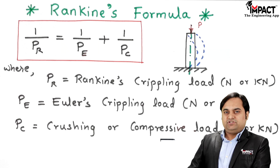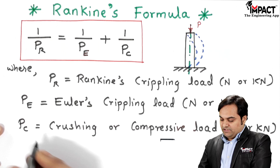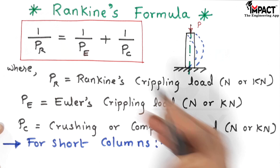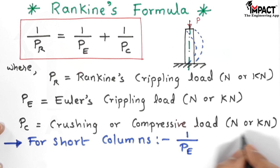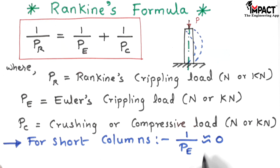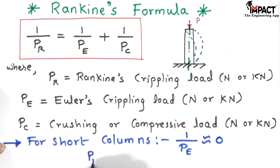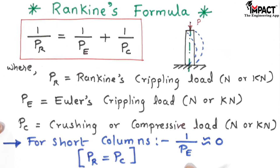For short columns, the value of 1/P_e is very small and almost negligible — essentially equal to zero — because P_e is very large for short columns, making its reciprocal negligible. Therefore, 1/P_r equals 1/P_c, which gives P_r equal to P_c. So for short columns, Rankine's crippling load equals only the compressive load, and the Euler's load term is eliminated.